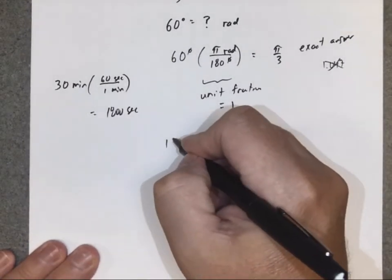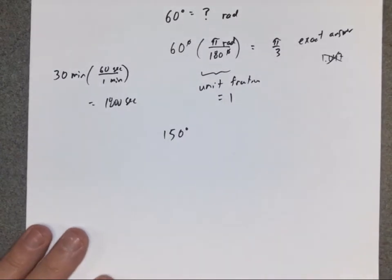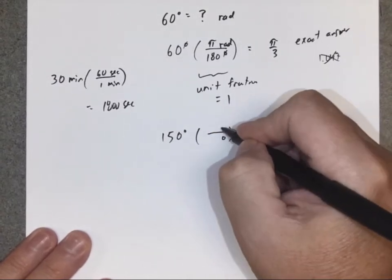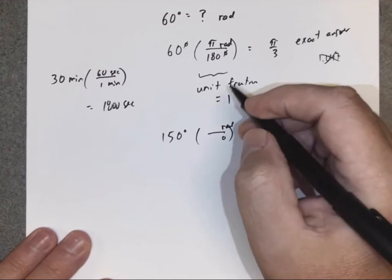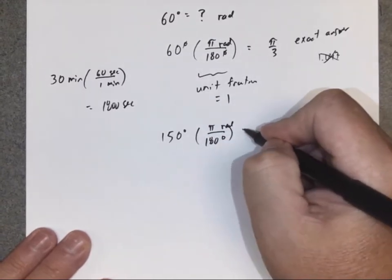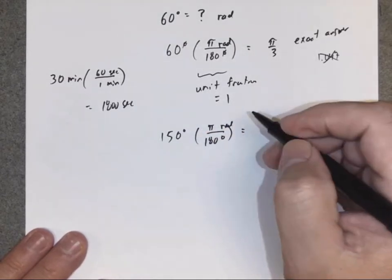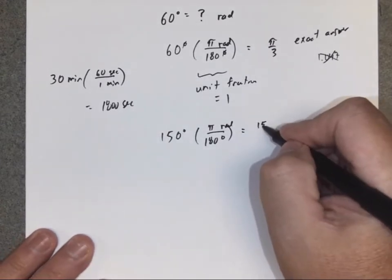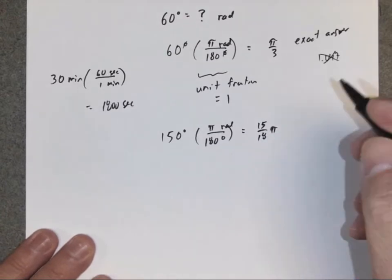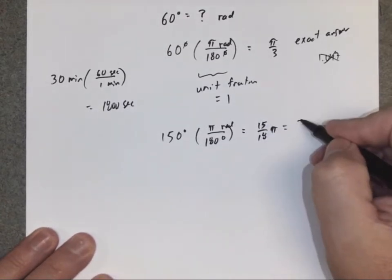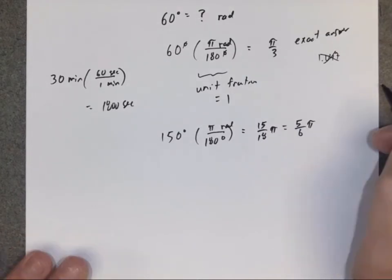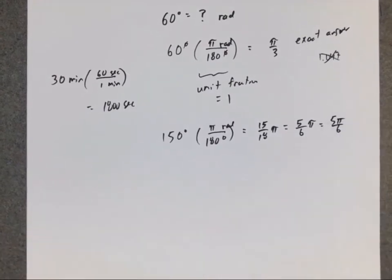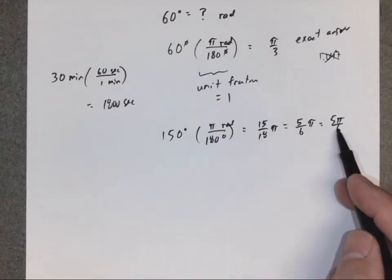Let's do another couple quick examples. What if I want to convert 150 degrees into radians? Start with degrees. Degrees in the bottom, radians in the top. There are π radians in 180 degrees. 150 over 180, if you divide by 10, that's like 15 over 18 times π. If I divide by 3, if I keep reducing, looks like 5/6 π. Sometimes they may write it 5π over 6. These are the same. 150 degrees equals 5π over 6 radians.